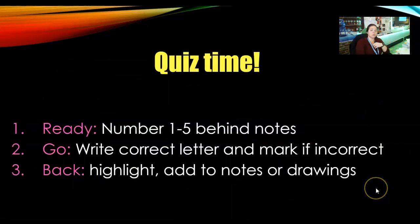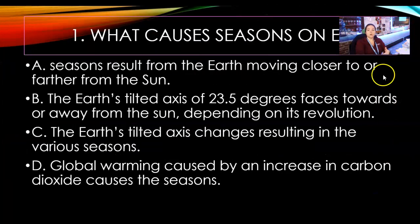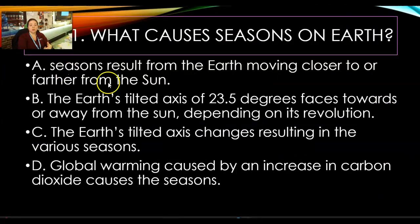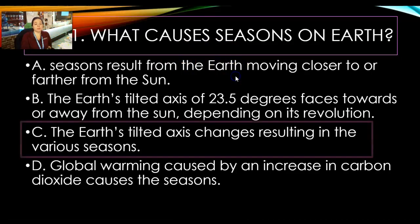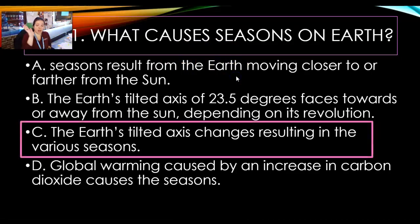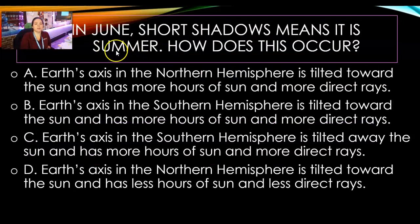Let's do quiz two — seasons quiz two. What causes seasons on Earth? Is it: seasons result from Earth moving closer or farther from the sun; the Earth's tilted axis of 23.5 degrees toward or away from the sun depending on its revolution; the sun's tilted axis changing resulting in various seasons; or global warming caused by an increase in carbon dioxide? The answer is B — the tilted axis results in our various seasons.